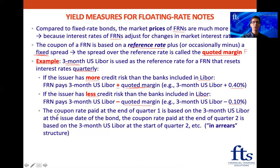How does this coupon rate work? The coupon rate paid at the end of quarter one is based on the three-month U.S. LIBOR rate at the issued date — in other words, at the start of quarter one. The coupon rate paid at the end of quarter two is based on the three-month U.S. LIBOR rate at the start of quarter two. We call that the in-arrears structure, and we'll talk more about that in the derivatives section.